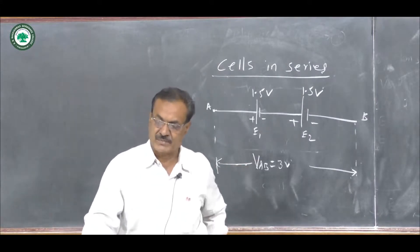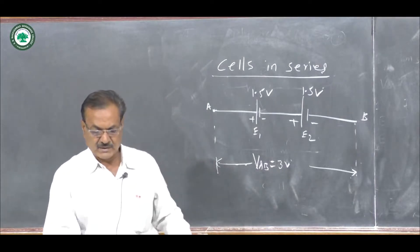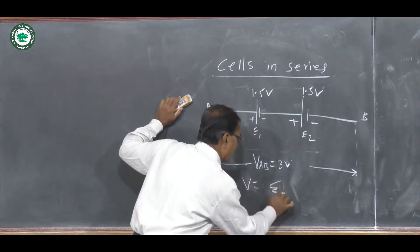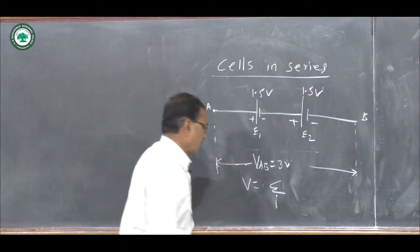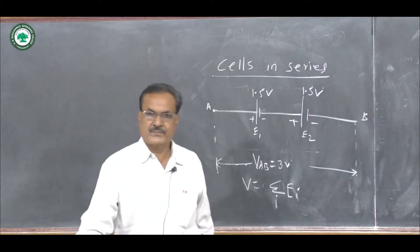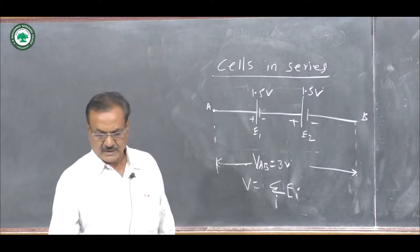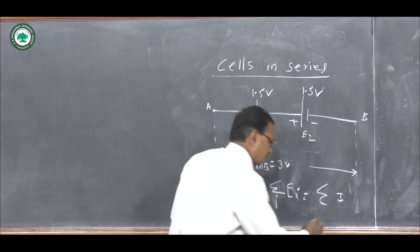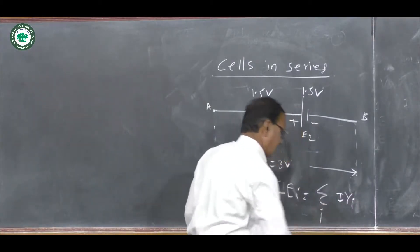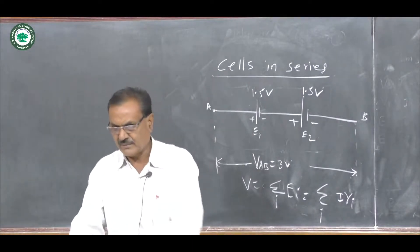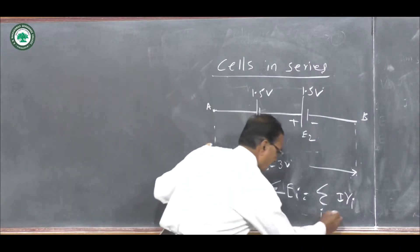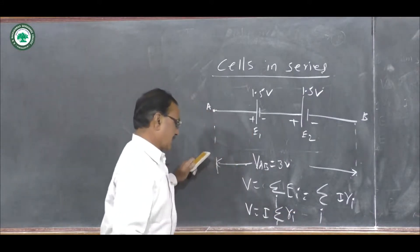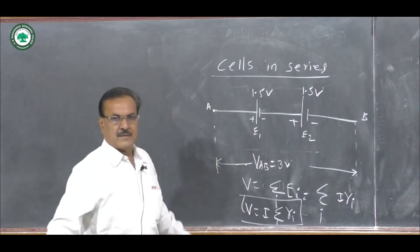Also, the equivalent internal resistance of cells in a series combination is the sum of their individual internal resistances. We can write: equivalent voltage V = algebraic sum of individual EMFs (E_i), and the equivalent internal resistance equals the sum of individual internal resistances r_i, giving V = I × (sum of r_i).